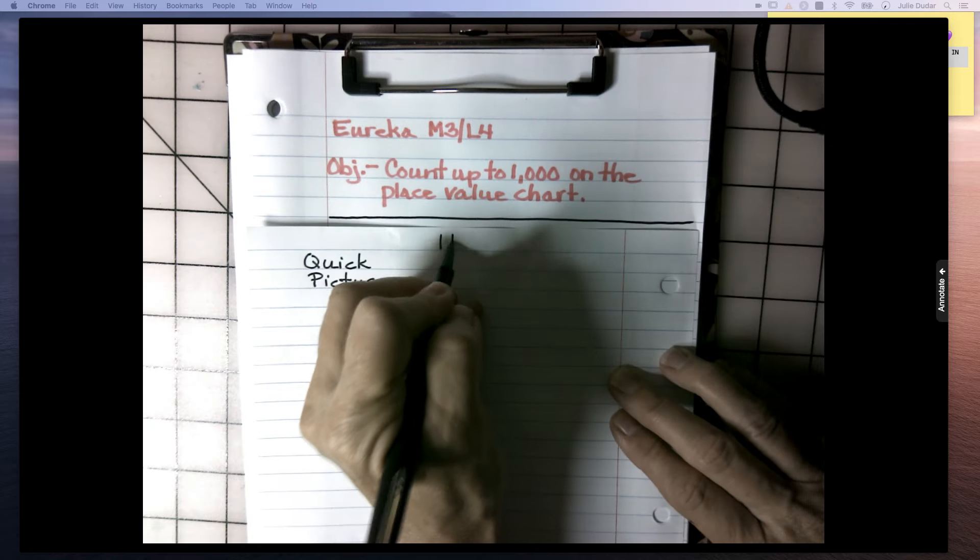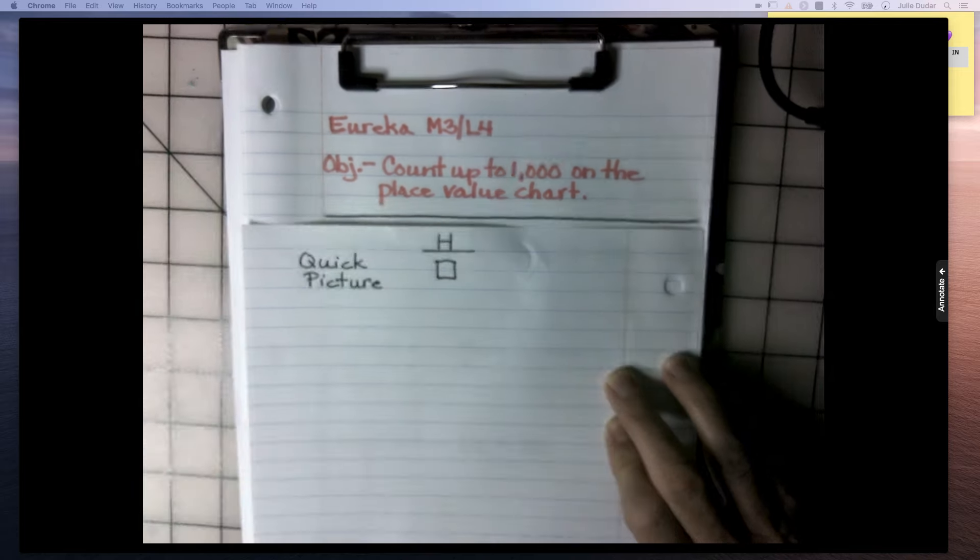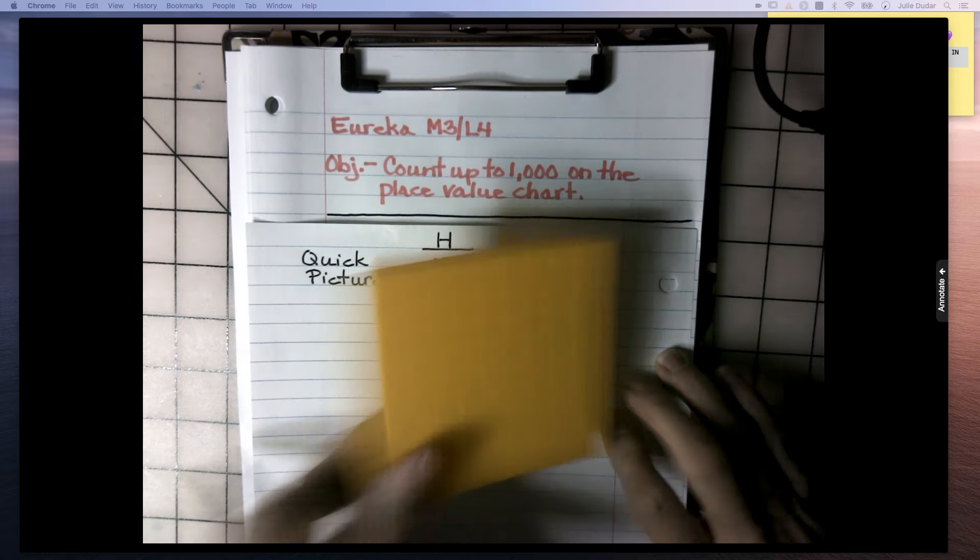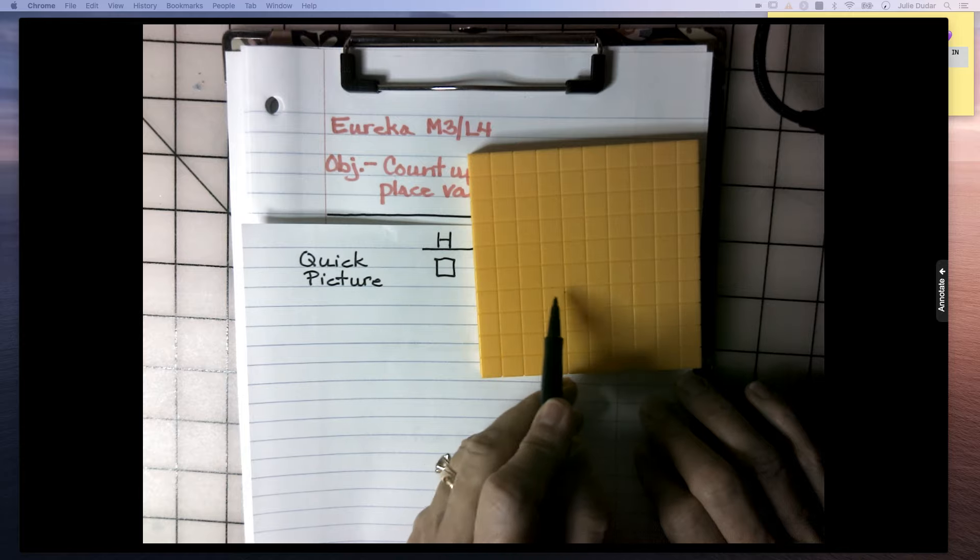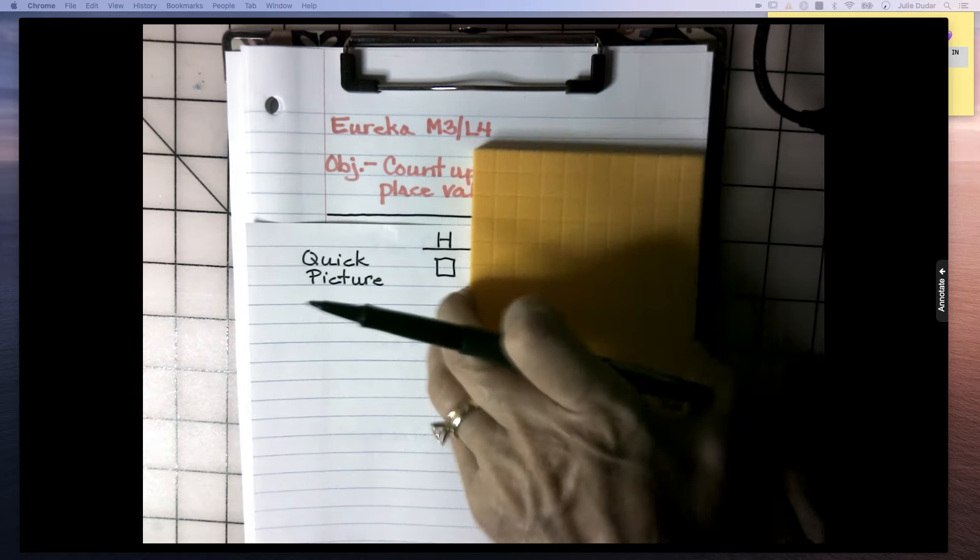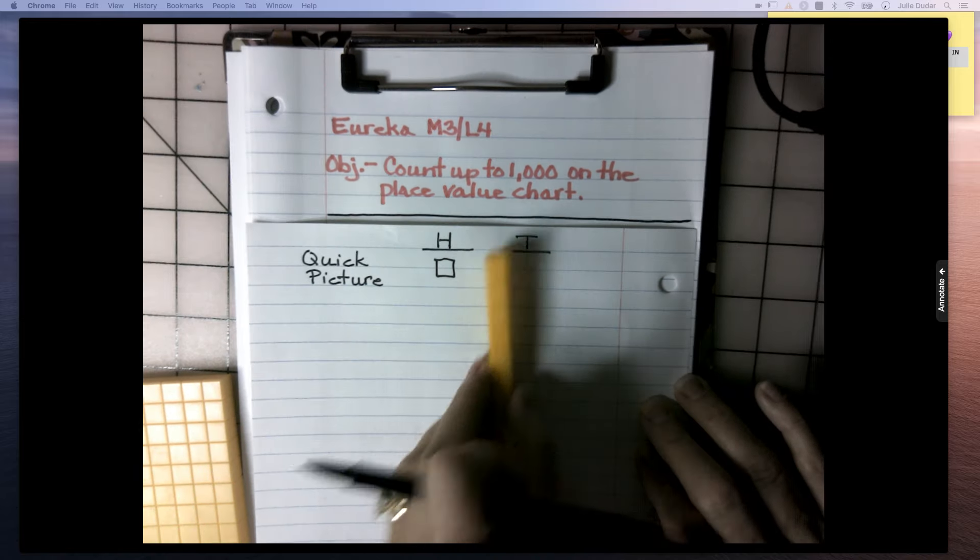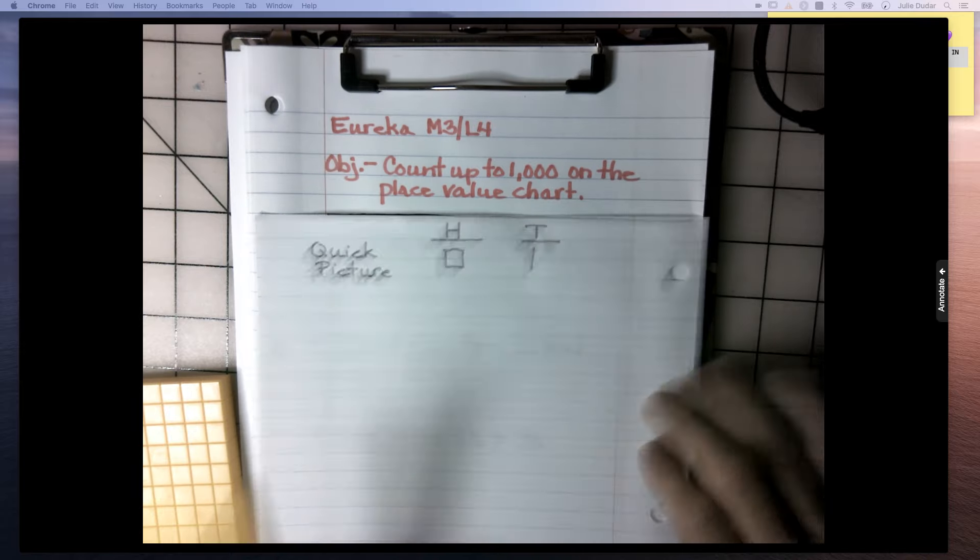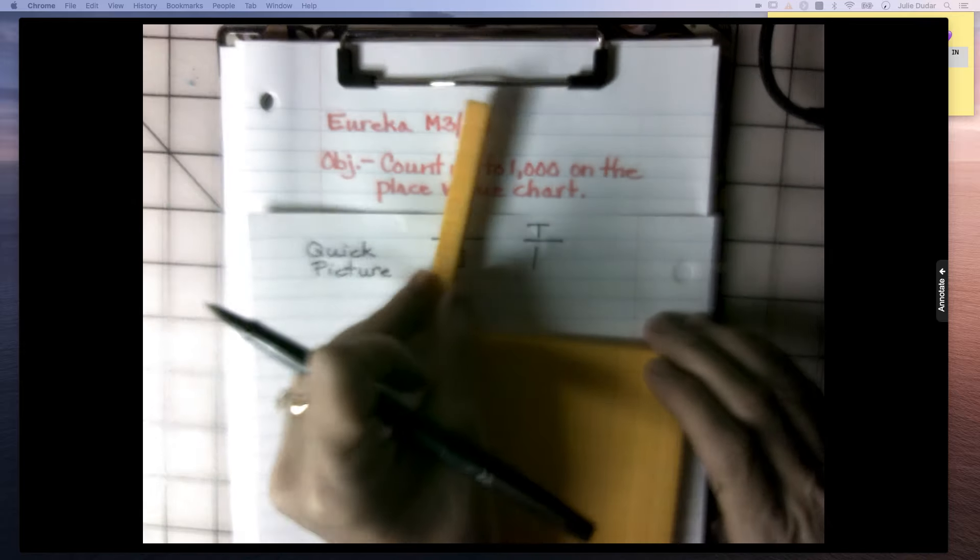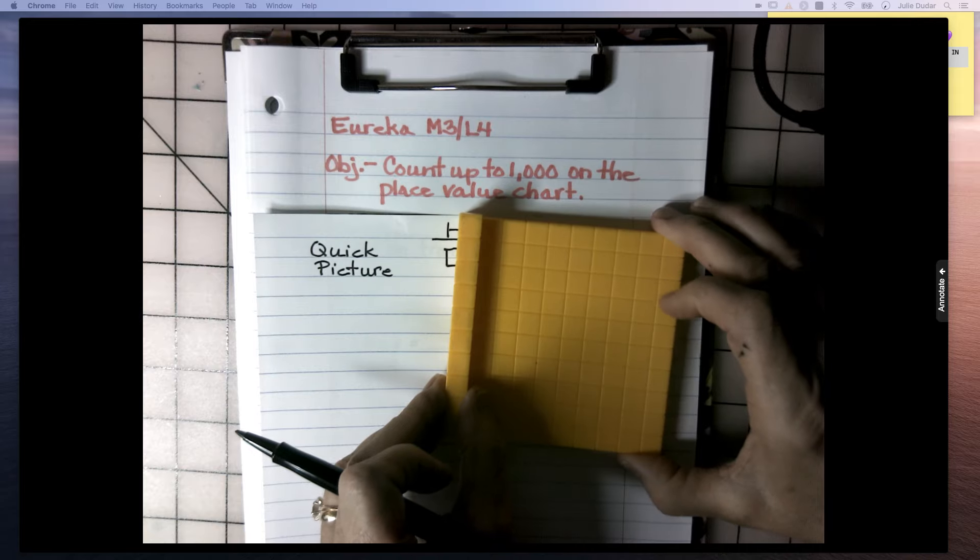So we have for hundreds, we were using a square because that represents this block here. And we can see that 10 tens makes 100. For tens, we were using this stick because this is a 10, and it takes 10 of these to make 100.